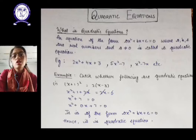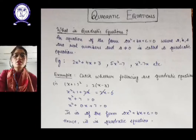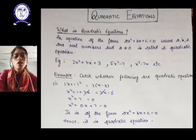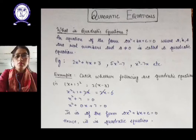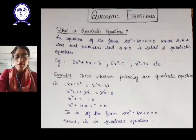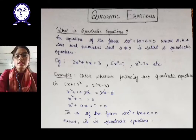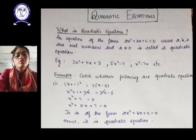Taking the first example: (x + 1)² = 2(x − 3). We must remember the algebraic identity: (a + b)² = a² + b² + 2ab. Applying this to (x + 1)² and multiplying the right side, we get x² + 1 + 2x = 2x − 6. The 2x terms cancel on both sides, leaving x² + 7 = 0. Since there is no x term, we can write 0x, but the highest power is 2, so the degree is 2. Therefore, it is a quadratic equation.